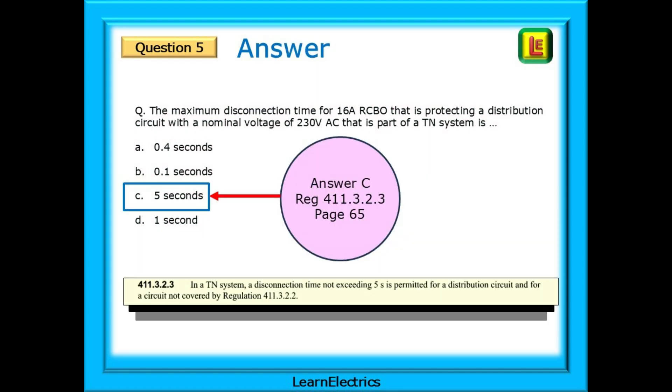The answer is C, 5 seconds. The answer is given in regulation 411.3.2.3, on page 65. Look at the index on page 583 for disconnection times distribution circuits. It will direct you straight to regulation 411.3.2.3.